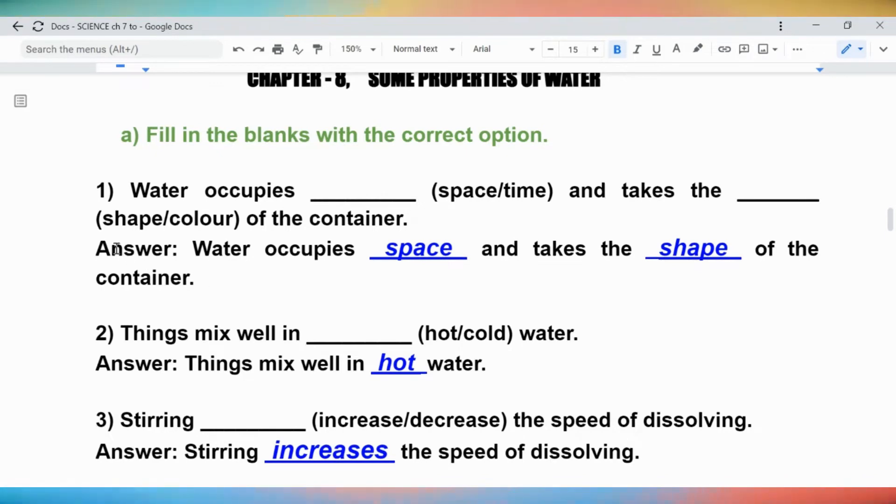Fill in the blanks with the correct option. Question 1: Water occupies blank (space/time) and takes the blank (shape/color) of the container. Answer: Water occupies space and takes the shape of the container.